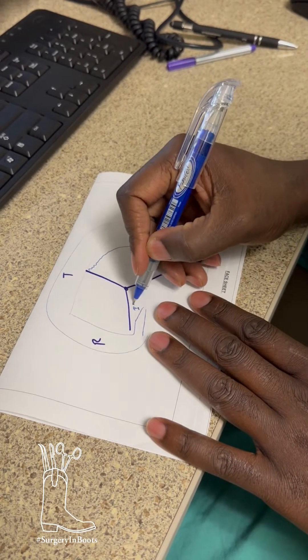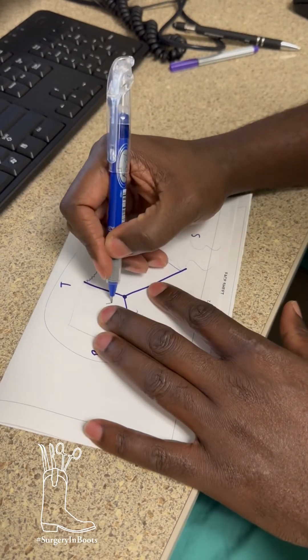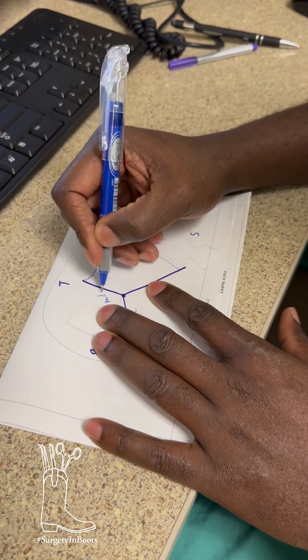This is the iliocolic artery. This is the middle colic. That's the one we were doing the right before, okay?